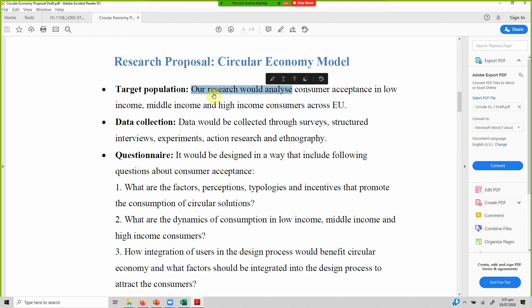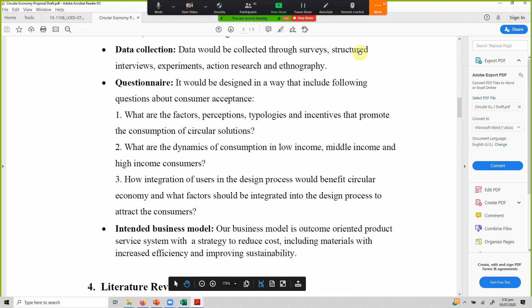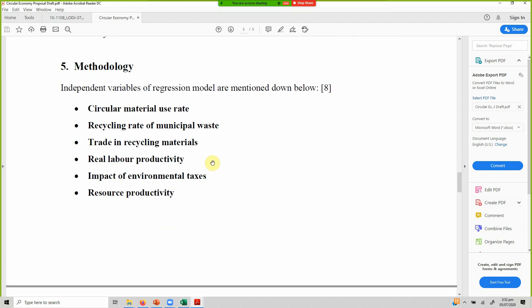Now what's the target population? Our research. Obviously, our means more than one person. Would analyze consumer acceptance in low income, middle income and high income consumers across EU. Well, this particular person wants to study the whole of EU. Is this possible? EU has got maybe more than 30 countries now. Although I've spent time in England, I don't know how many countries are in there. So data collection will be done through surveys, structured interviews, experiments, action research and ethnography. How many techniques, like he or she included any technique that they got hold of. This is not literally possible. Then there is a questionnaire. How did you get this questionnaire? This is something that looks like qualitative research, but here it was mentioned surveys. So again, then again the literature. I can go on and on.